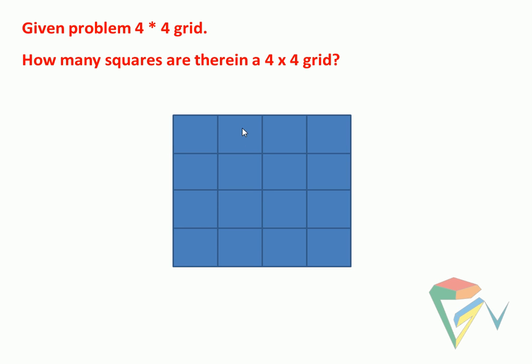So we have 1, 2, 3, 4, and 1, 2, 3, 4. So 4×4 will be 16, as we know. But individually, how many can be there inside? That is the problem. So we are going to the next one.